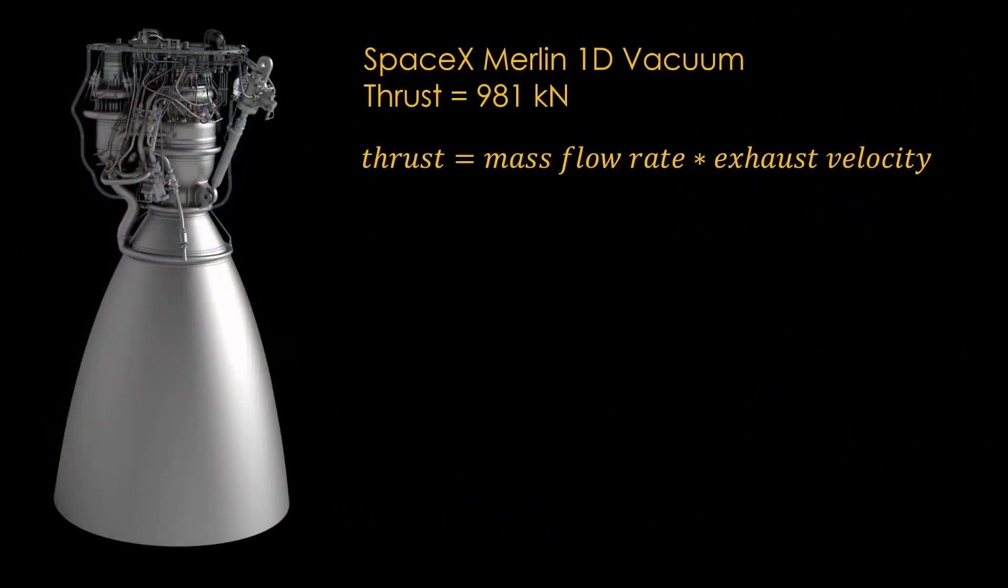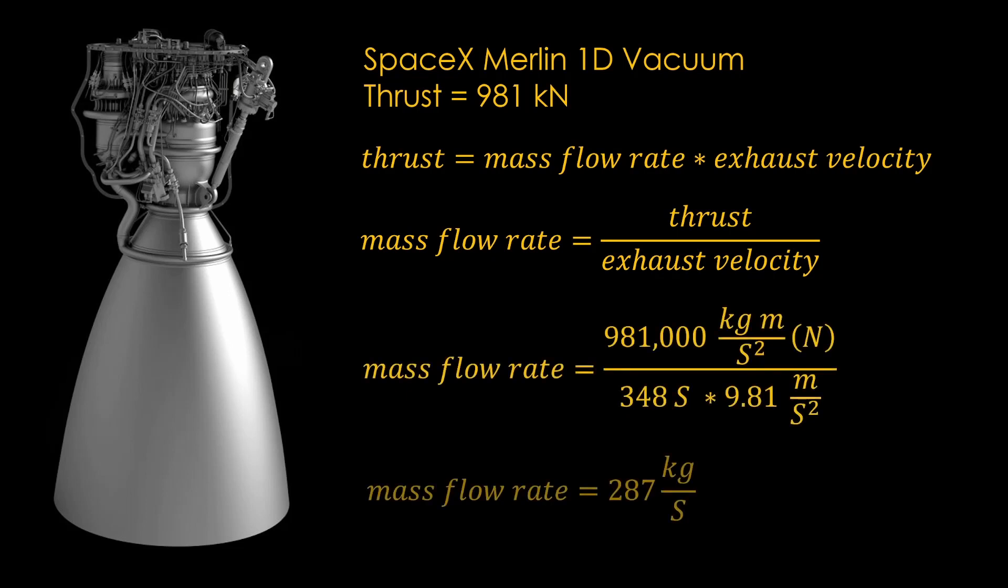We can now return to looking at the Merlin 1D vacuum, and we have enough information to figure out the mass flow rate. After refactoring the equation to solve for mass flow rate, we plug in the values we know, and we come up with 287 kilograms per second. Before I learned this, I used to think that people who could figure out mass flow rates were doing some advanced work, but it turns out that it's really simple if you know the thrust and specific impulse. By the way, if you know the mixture ratio for an engine, you can use that to figure out the mass flow rate for each propellant, if you care.